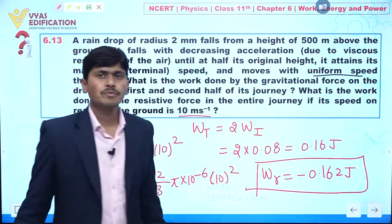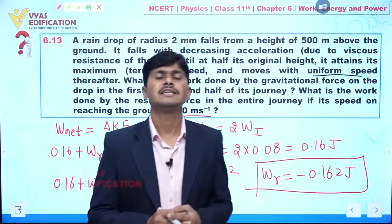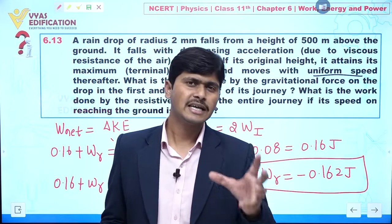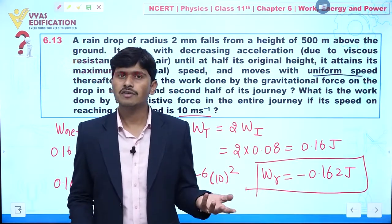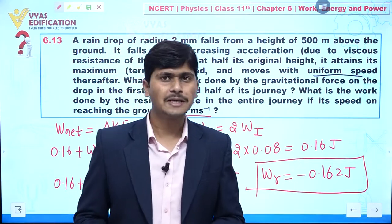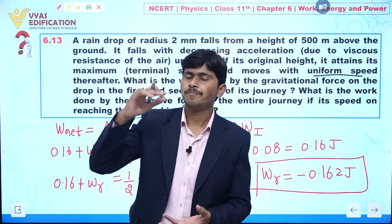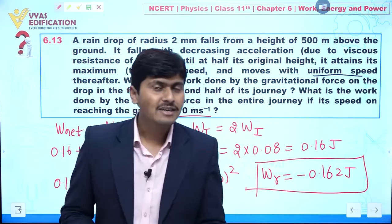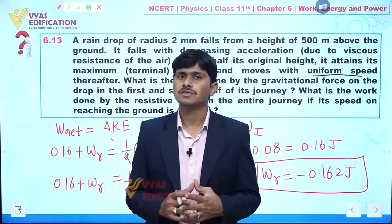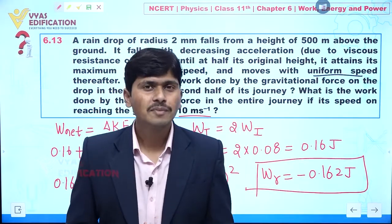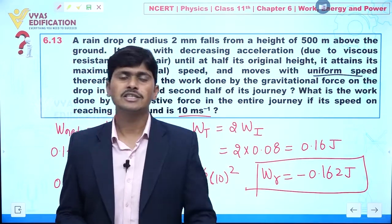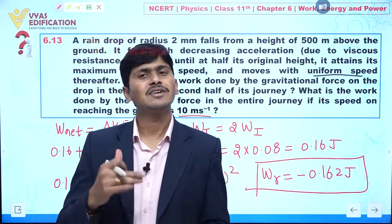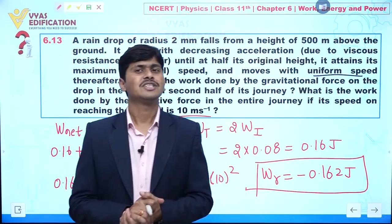The most important conceptual point: whether the raindrop moves with acceleration, retardation, or constant velocity, work done by gravitational force in each equal part of the journey always remains the same. To find work done by the resistive force, we use the final velocity when the drop touches the ground and apply the work-energy theorem to find the resistive work done.